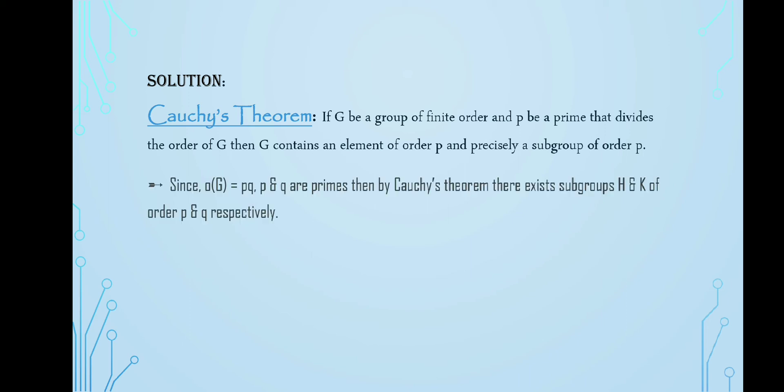Now, as H and K are cyclic subgroups of G as P and Q are primes, then the group HK exists and it is cyclic as H and K are cyclic. And it can also be written that order of HK equals to order of H multiplied by order of K divided by order of H intersection K.